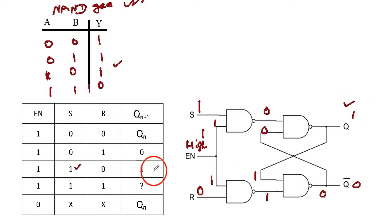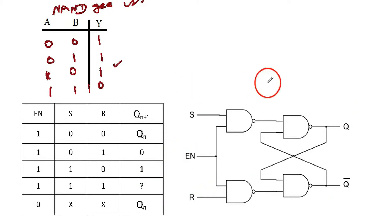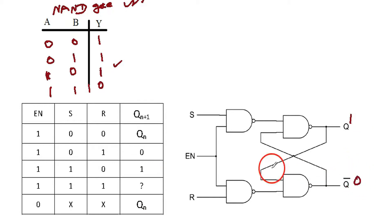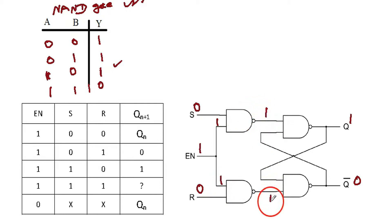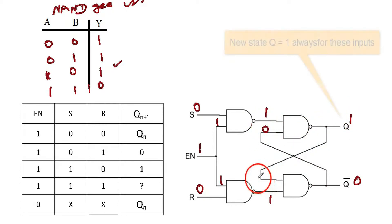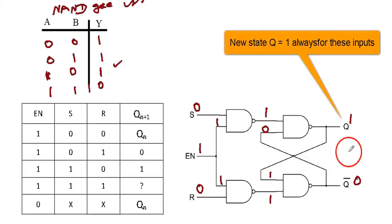Now let Q=1 and Q-complement=0 as the previous state. Now let the inputs be 0,0. Clock is high. So 1 is here, 1 is here. NAND gate gives 0; then 1,0 gives 1. So 0 comes here. And 1,1 gives 0 — this is again a stable state. So if S=0 and R=0, whatever the last state was, that state is retained.